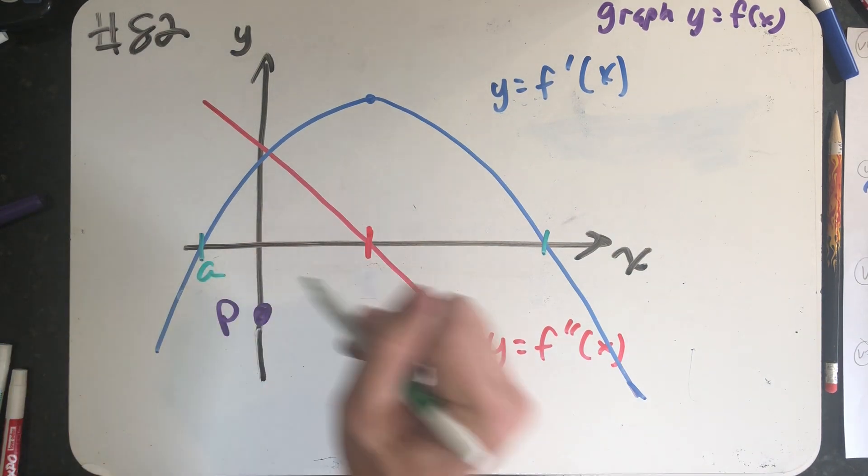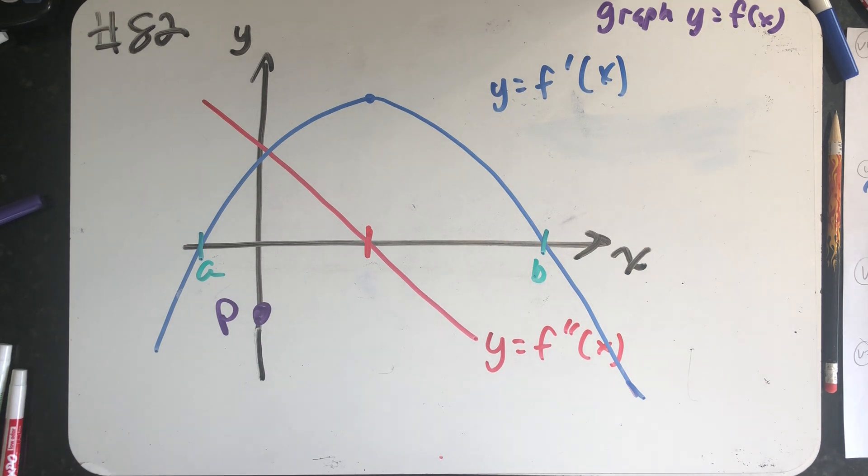And in fact, I will call this a, and this point over here b, because that's where my first derivative is equal to zero. Those are critical points.